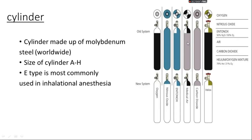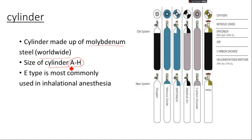If we talk about the cylinders most commonly used, what are they made of? They are made of molybdenum steel. Molybdenum steel is used worldwide and in many countries as the cylinder material. The sizes of the cylinders range from A to H, where A is very small and H is very large. The size most commonly used in inhalational anesthesia is E-type.